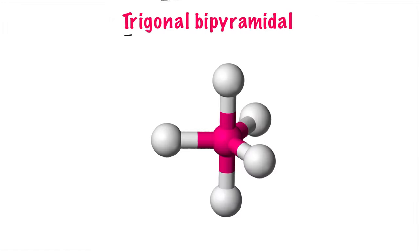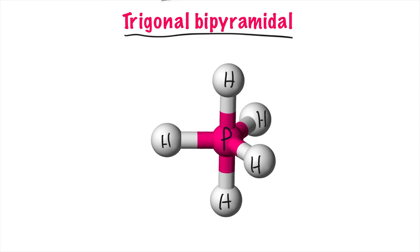Another molecular shape is the trigonal bipyramidal. In this case, you have a central atom like phosphorus without any lone electrons and five atoms around the center — atoms with single bonds like hydrogen. Each angle in this shape is 90 degrees. You can think of it as a pyramid pointing up and a pyramid pointing down, which is why we call it bipyramidal. This is a very rare shape with very few examples.